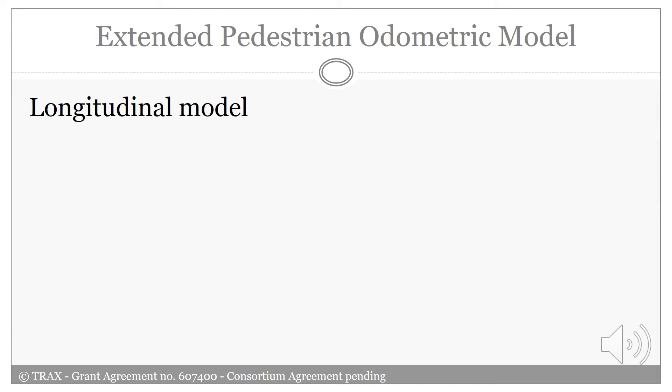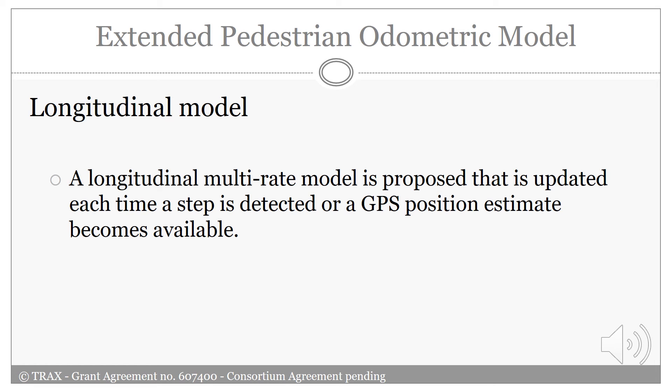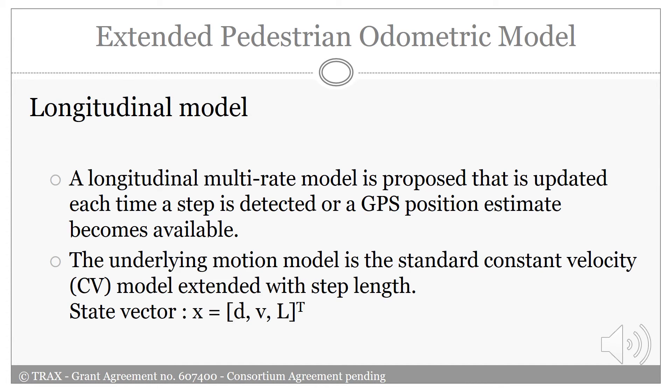Now I'm gonna introduce two extended versions of the pedestrian odometric model. The first one is a longitudinal model. A longitudinal multi-rate model is the model that is updated each time a step is detected or a GPS position estimate becomes available. The underlying motion model is the standard constant velocity extended with step lengths. The state vector contains three components: total travel distance, velocity, and step length.